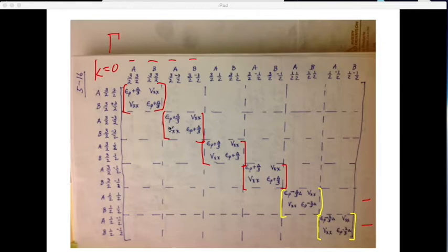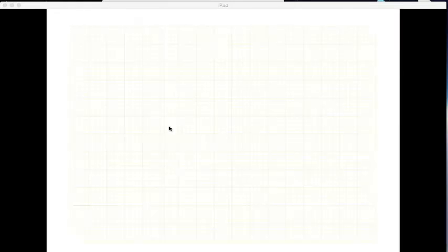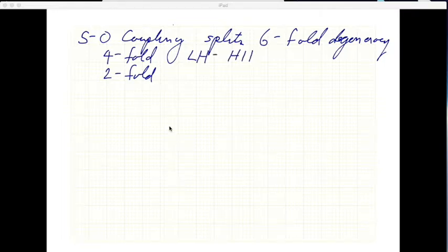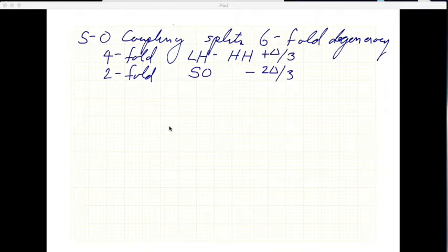Now I'll just draw some pretty pictures. The spin-orbit coupling splits this six-fold degeneracy that we initially had into a four-fold and a two-fold. The four will become your light hole and heavy hole bands, and the two will be your split-off band. The split-off band got lowered by negative two delta over three. The light and heavy hole states got raised by delta over three. So everything started at epsilon sub P, and the light hole and heavy hole get raised up by delta over three, while the split-off band gets lowered by negative two delta over three. The total splitting is delta.